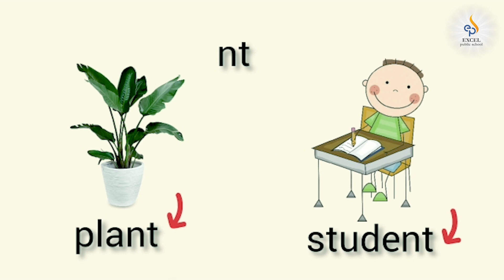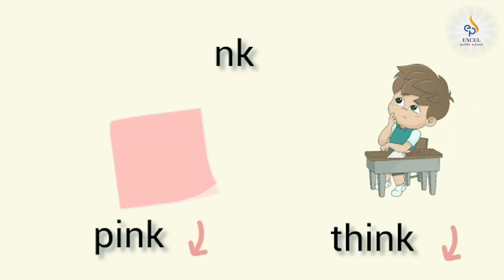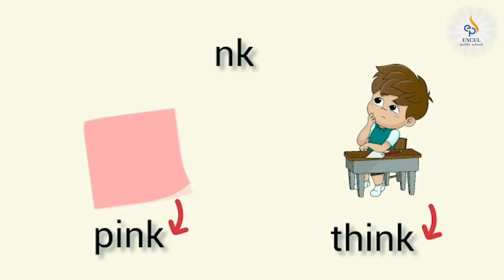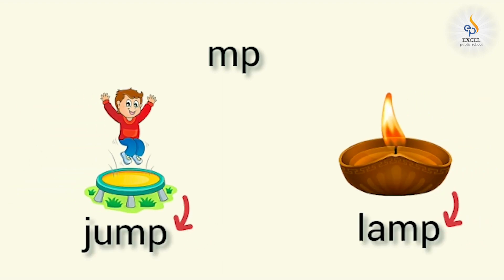Kids, did you notice that these words also have blends in the beginning? N, K, nk. Pink, think. N, P, mp. Jump, lamp.